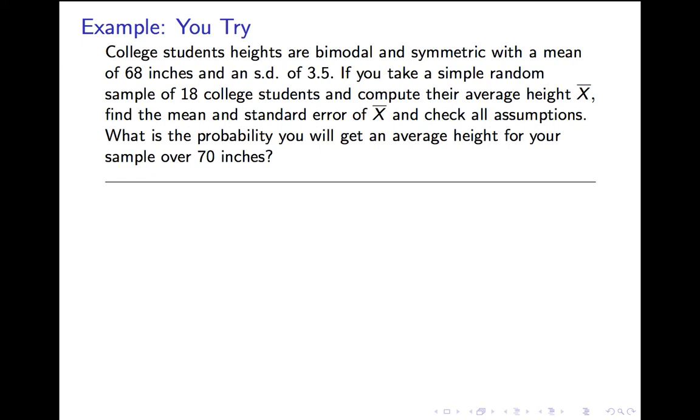Now I want you, if you haven't been doing these on your own, I want you to try doing this on your own. So college students' heights are bimodal and symmetric, with a mean of 68 and a standard deviation of 3.5 inches. If you take a simple random sample of 18 college students and compute their average height, x-bar, I want you to do two things. I want you to define the mean and standard error of x-bar, because there's three things. Check all the assumptions, and find the probability you'll get an average height for your sample over 70 inches. Pause the tape, do these calculations, write them down, come back and see how you did.